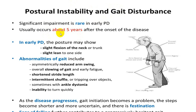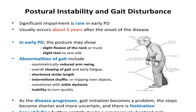In early stage there is typical flexed posture: head flexed forward, neck bent, trunk bent, slightly leaning to one side. During gait: asymmetrically reduced arm swing, slowing of gait, early fatigue, shortened stride length, intermittent shuffling, tripping over objects, ankle dystonia, and inability to turn quickly. As disease advances, the person has a very short shuffling gait — also called festinating gait — with fear of falling, difficulty stopping and initiating movement.